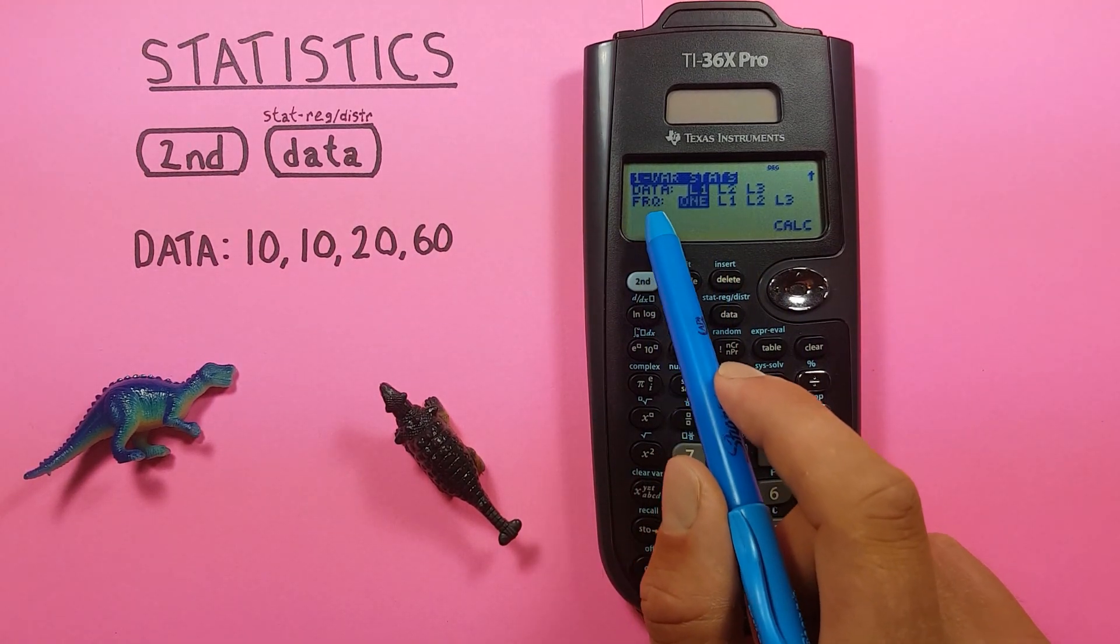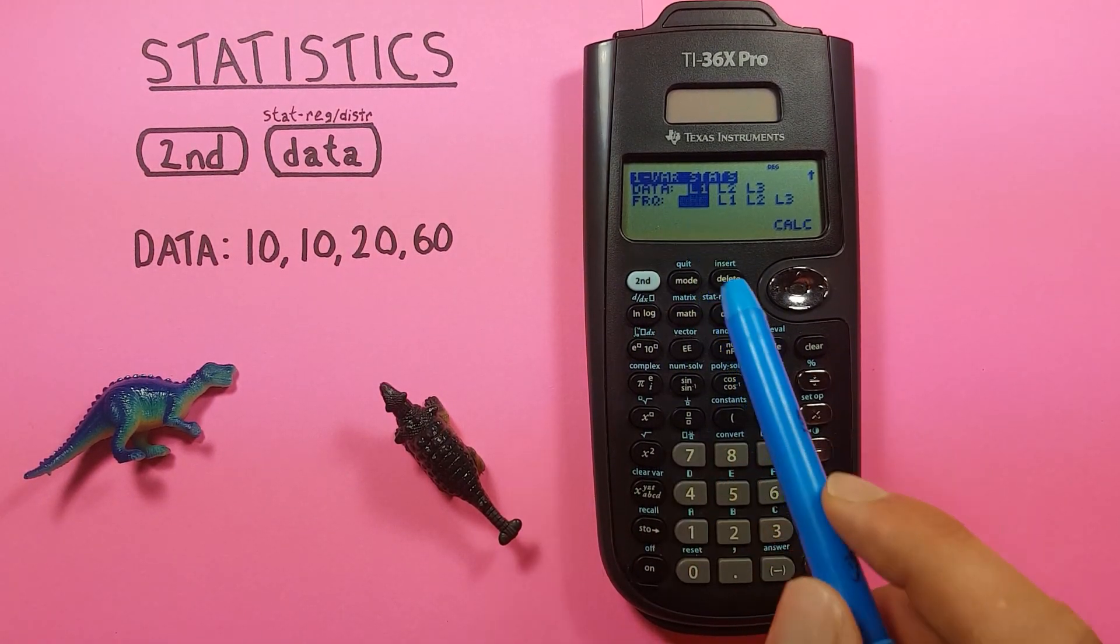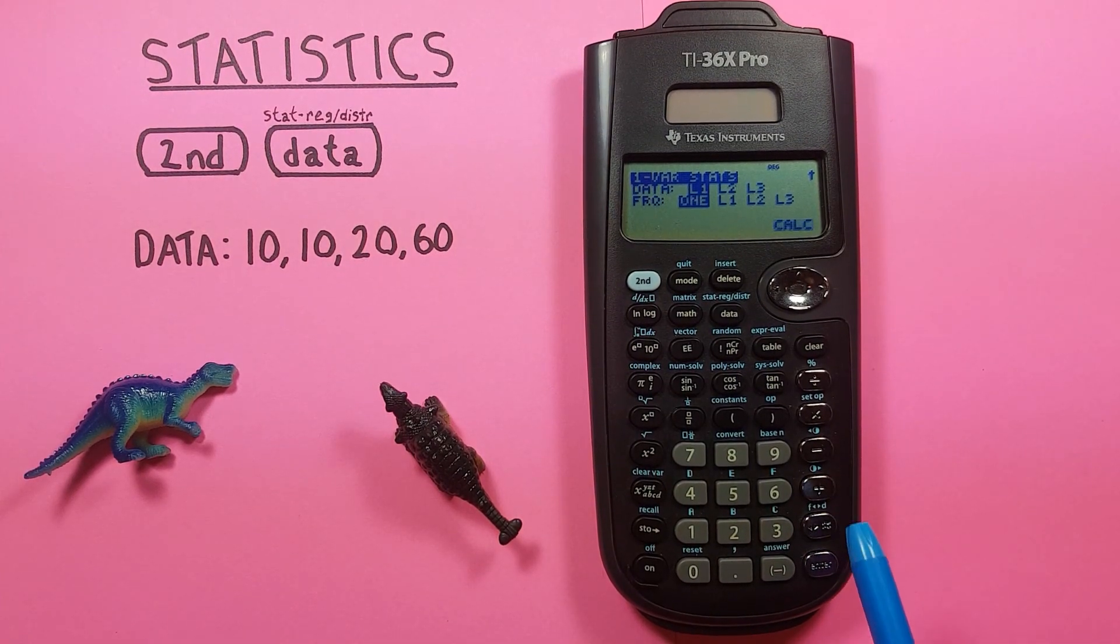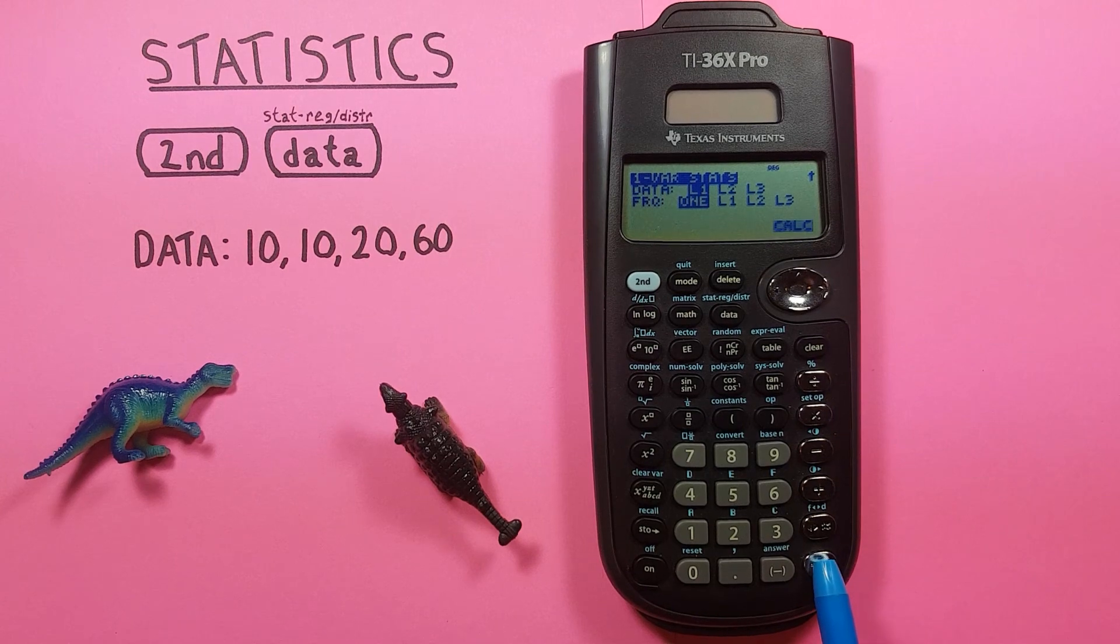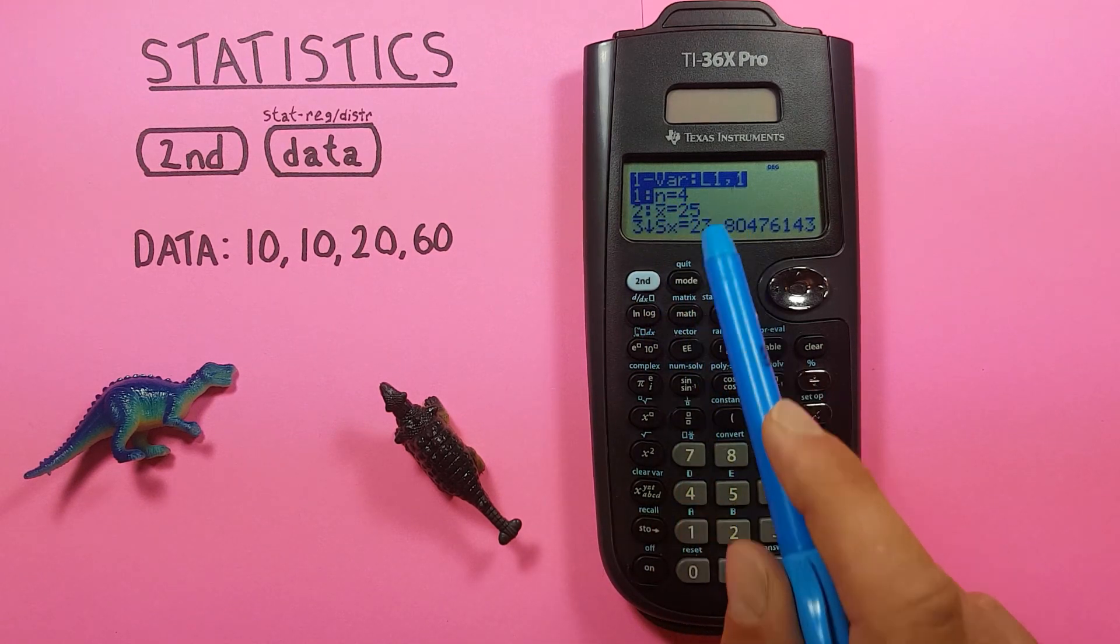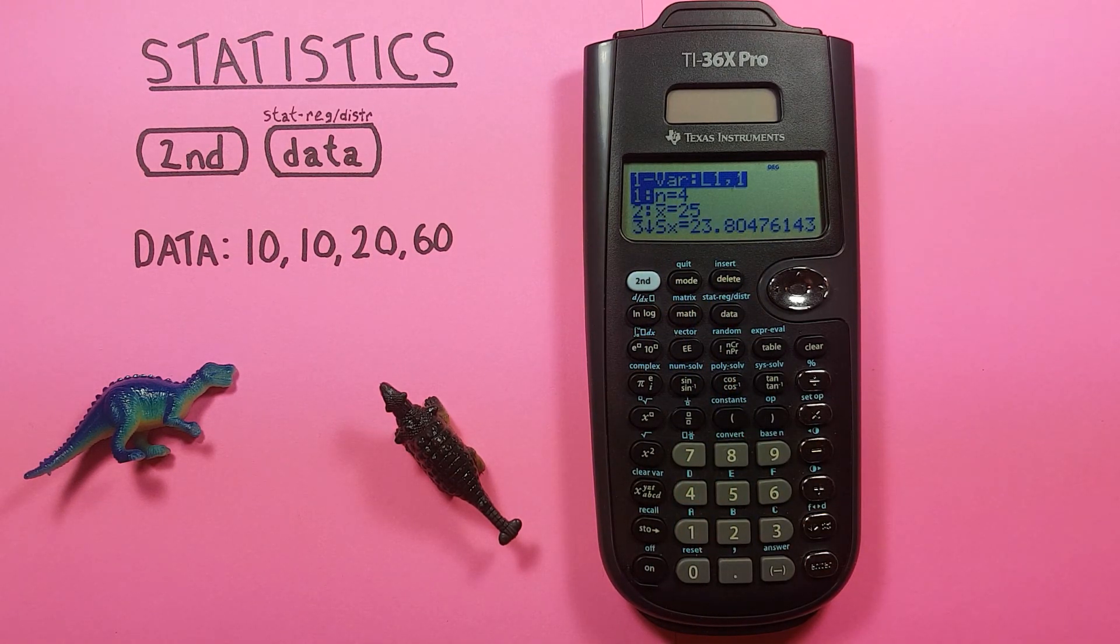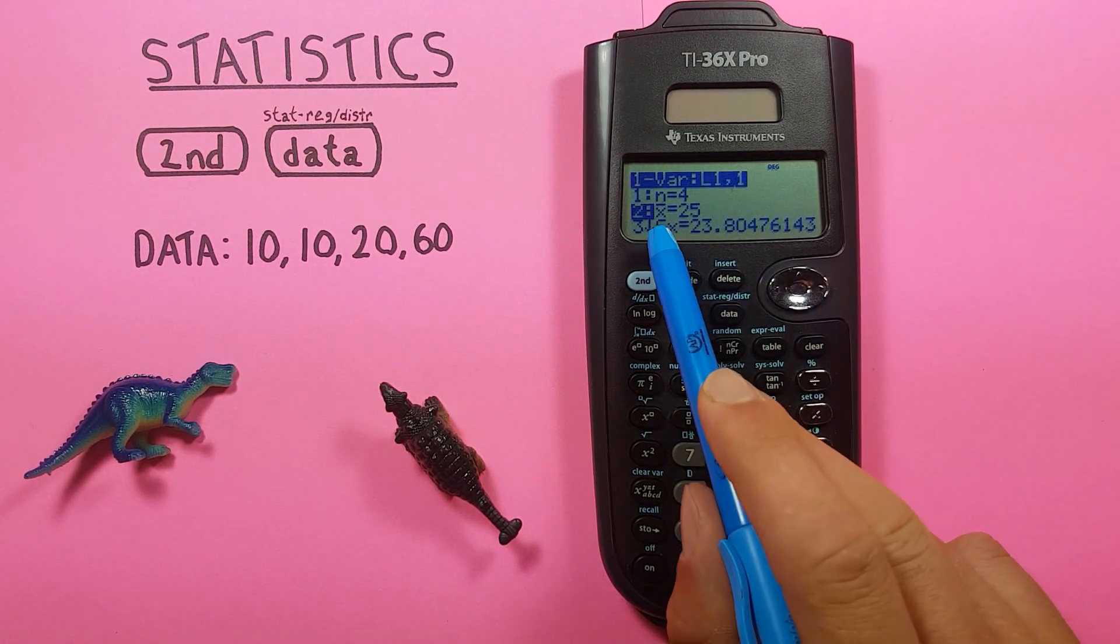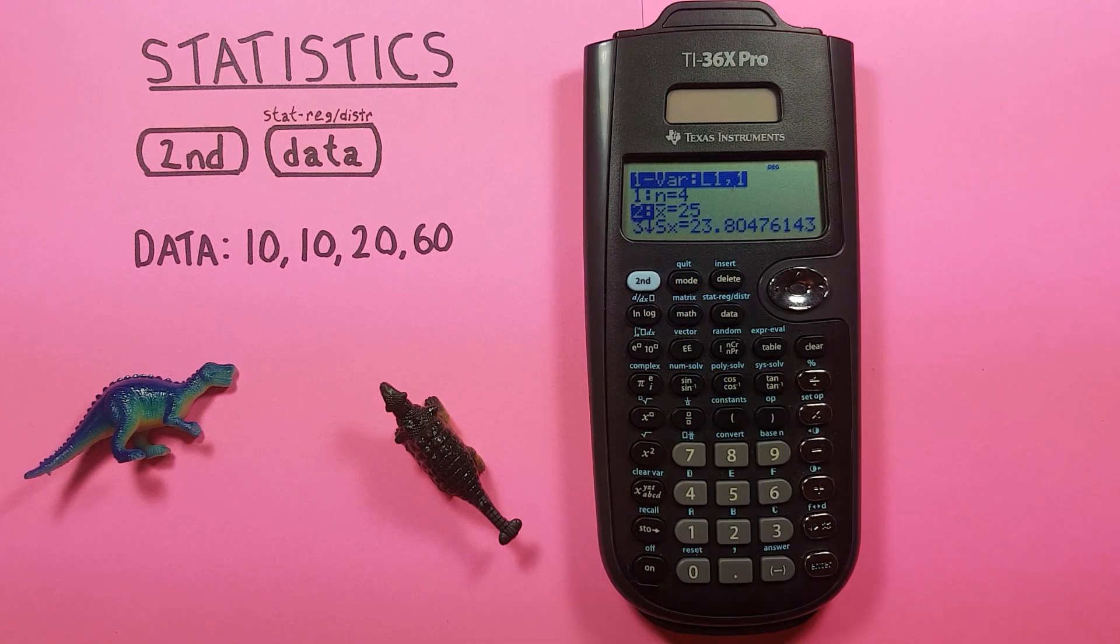And then this asks us for the frequency of our data. Since we've entered all our data points we can press enter on the one and then enter on calc and it calculates our data. First we get number one n equals four. That tells us there's four individual pieces of data in our data set. If we scroll down we see number two gives us an X bar of 25 or a mean of 25.